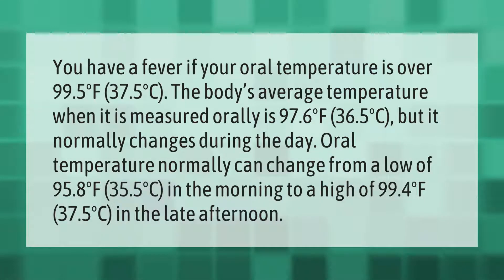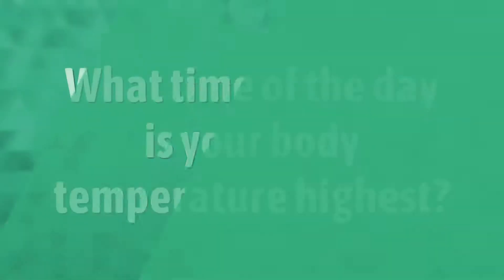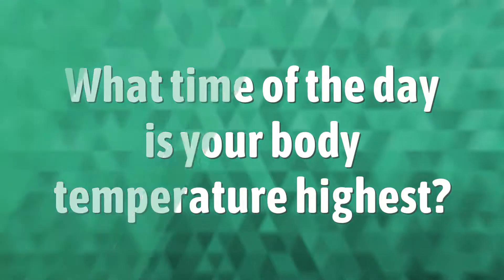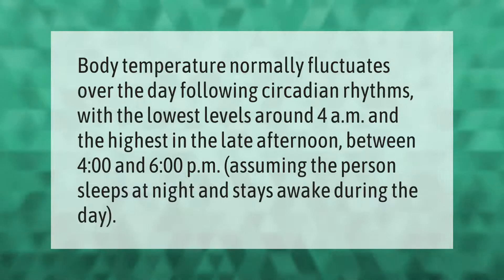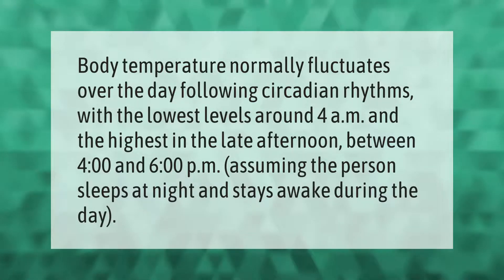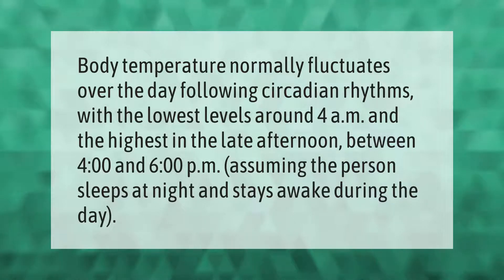Body temperature can reach a high of 99.4 degrees Fahrenheit (37.5 degrees Celsius) in the late afternoon. Body temperature normally fluctuates over the day following circadian rhythms, with the lowest levels around 4 a.m. and the highest in the late afternoon between 4 p.m. and 6 p.m., assuming the person sleeps at night and stays awake during the day.